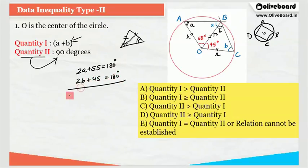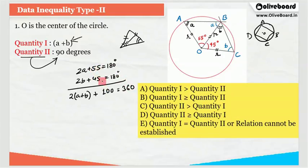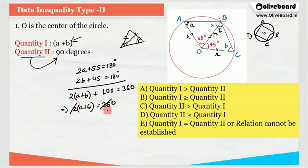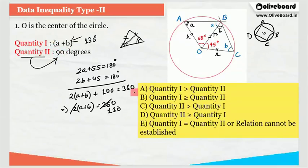If I add these two equations, I get 2A plus 2B plus 100 equals 360 degrees. So 2(A plus B) equals 260, which means A plus B equals 130 degrees. Quantity 1 is 130 degrees and quantity 2 is 90 degrees. So quantity 1 is greater than quantity 2, and the answer is option A: quantity 1 is greater than quantity 2.